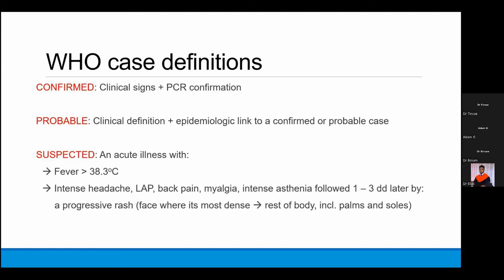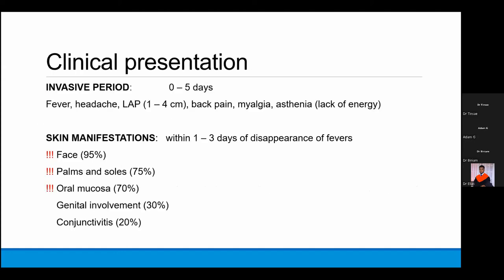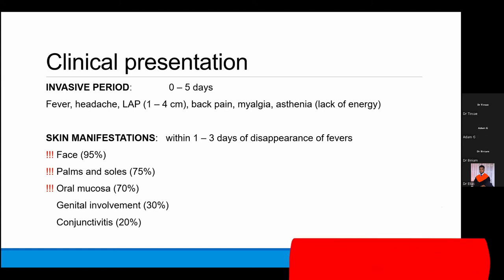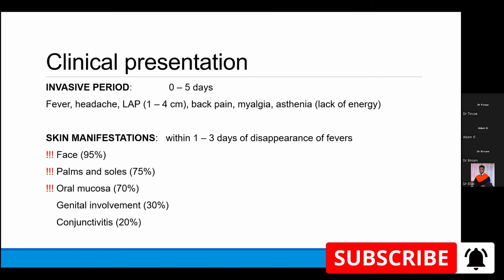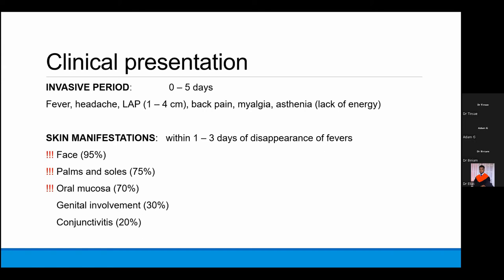The invasive period, or pre-skin rash period, lasts five days or less and consists of fever and headache. What is unique about monkeypox compared to other pox viruses is that patients have large lymphadenopathies of one to four centimeters, especially in the inguinal area. Patients also have back pain, myalgia, and asthenia. Within one to three days after the fever disappears, the skin rash starts — most commonly on the face, palms and soles, with the third most common area being the oral mucosa. This was the typical monkeypox presentation prior to the current outbreak.